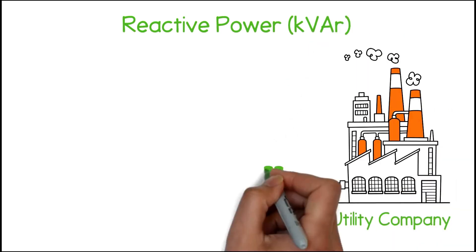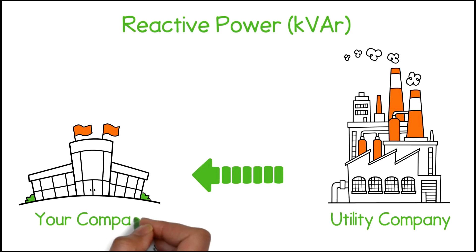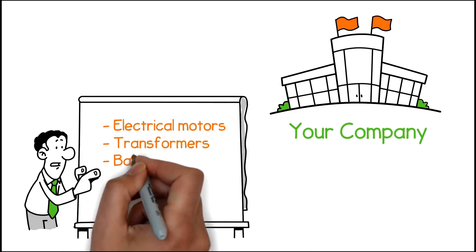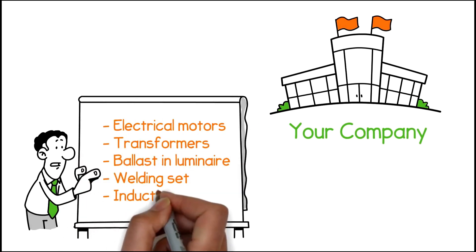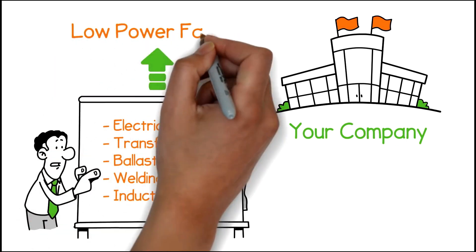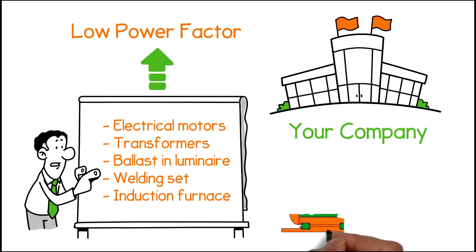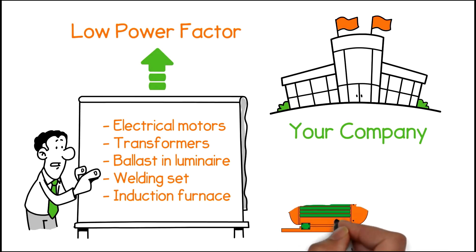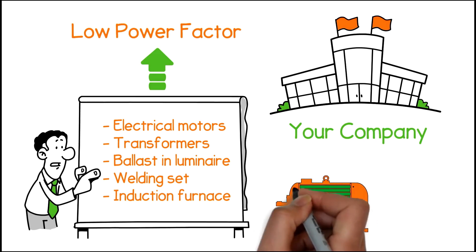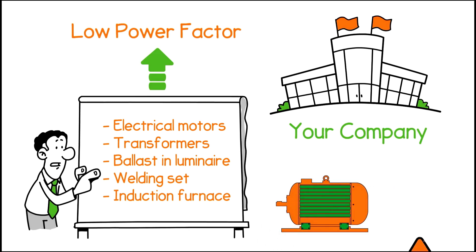Reactive power is the non-working power delivered to a facility. Why would you have non-working power? Inductive power equipment such as electrical motors, transformers, a ballast in a luminaire, a welding set, or an induction furnace are just some of the equipment that will cause your facility to run with a low power factor. Nearly every site, no matter what your industry, will have a poor power factor. And if you have a KVA demand component on your bill, you will be penalized for having a poor power factor.